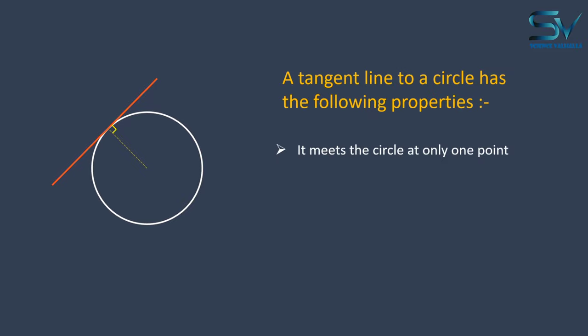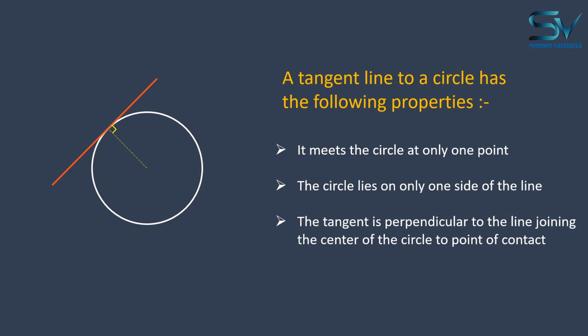The first property is that it meets the circle at only one point. The second property we learned from this diagram is, the circle lies on only one side of the line. The third property we discovered is that the tangent line is perpendicular to the line connecting the center of the circle to the point of contact.